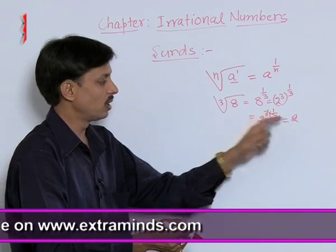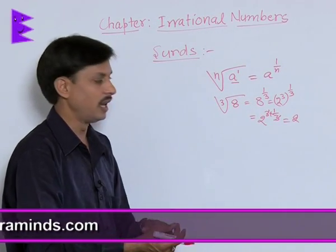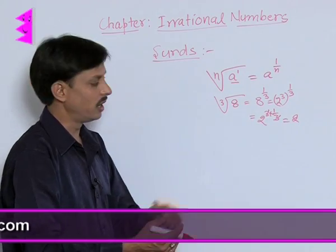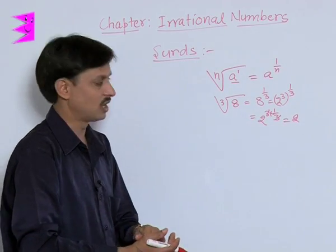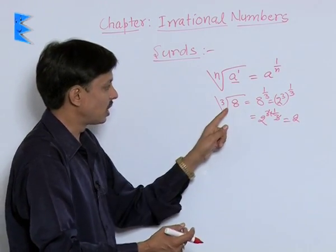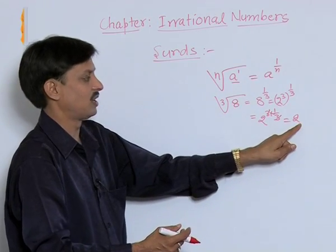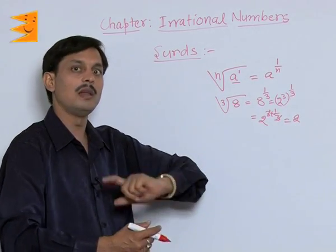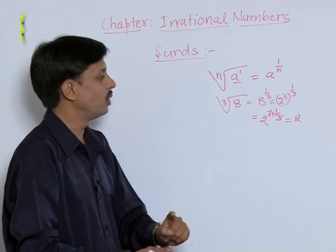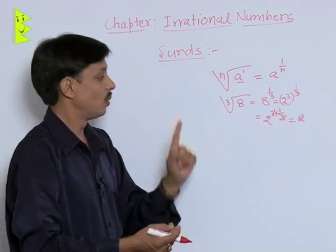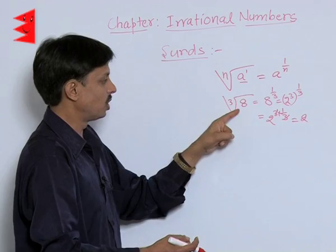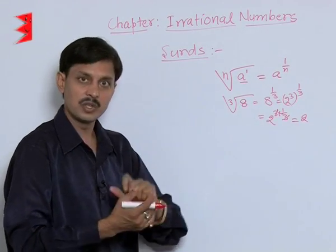2 is what? Natural. 2 is what? A whole number. 2 is what? An integer. 2 is what? A rational number. This result of cube root of 8 is a rational number. But initially I told you the SIRd is always irrational. So this result is not a SIRd.